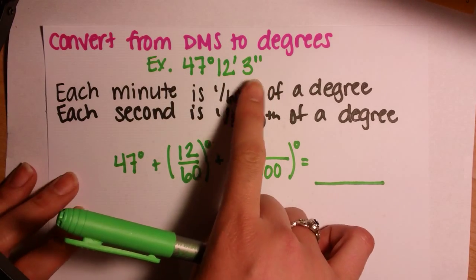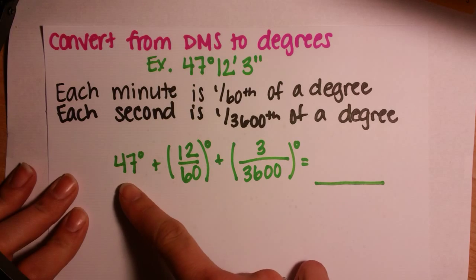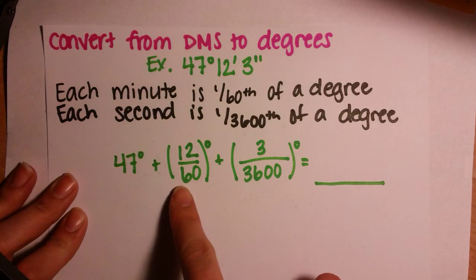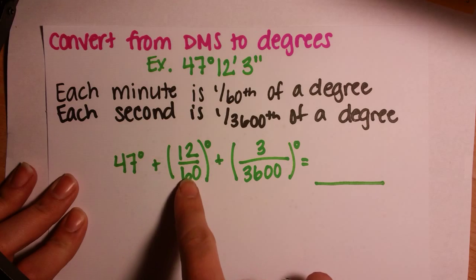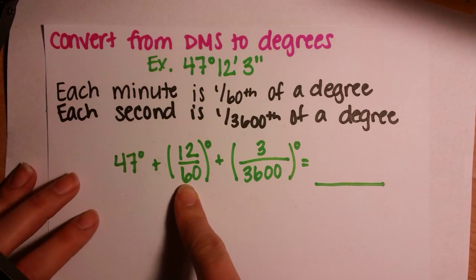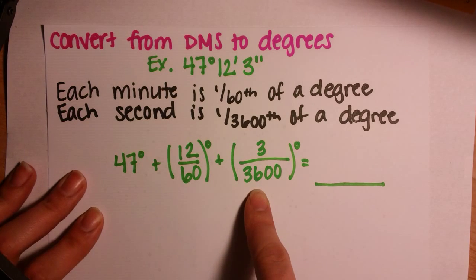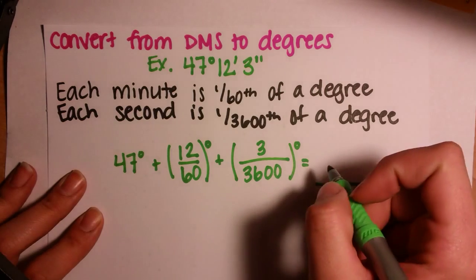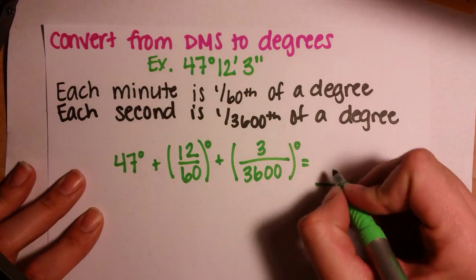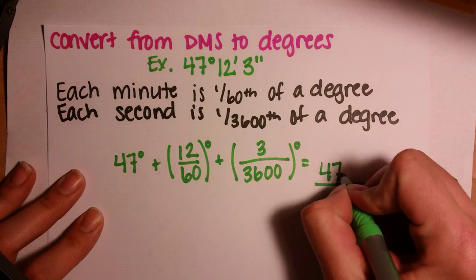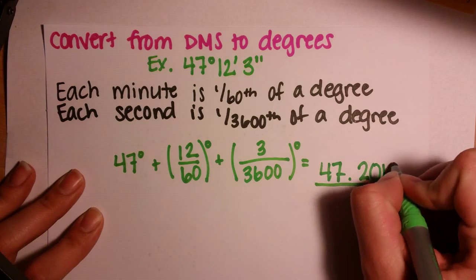To convert to degrees, we'll take 47 degrees plus our 12 minutes over 60 to get that part of the degree, and then we'll have our 3 seconds over 3,600. We'll add these together, and you'll be left with 47.201 degrees.